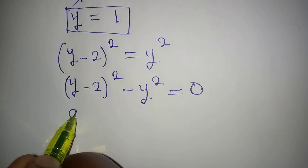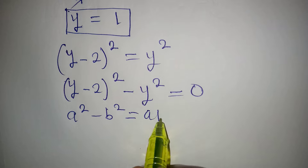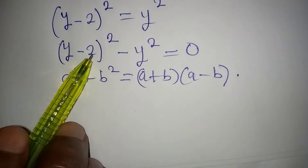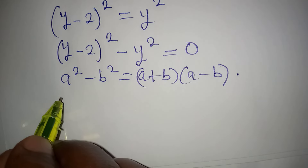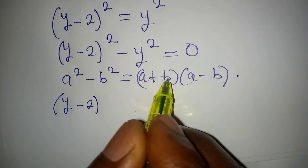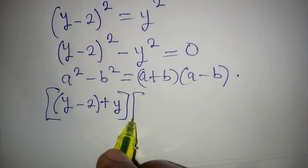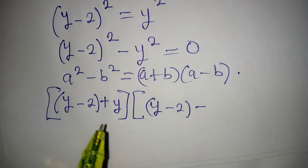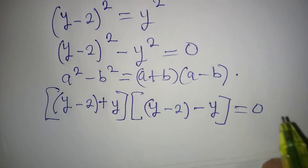We apply the standard identity: a squared minus b squared equals (a plus b)(a minus b). Here, the whole of (y minus 2) is a, and y is b. So in the first bracket we have (y minus 2 plus y), and in the second bracket we have (y minus 2 minus y), and everything equals 0.